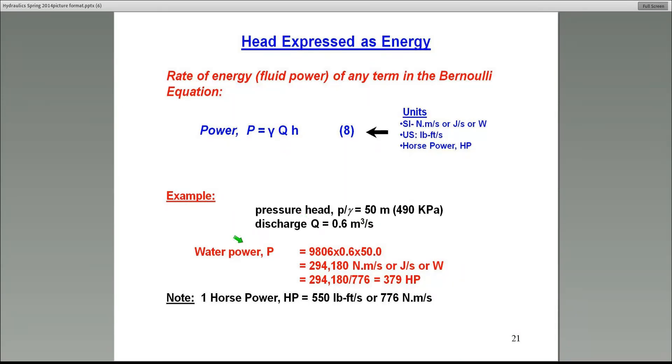Then the water power, the amount of energy that that particular fluid possesses, is obtained by using this formula gamma, Q, and H. So in this case, gamma is 9806, and Q is 0.6, and therefore, multiply all these three quantities, you end up with 294,180 newton meter per second or joules per second. Remember, that's also called a watt, a W. That's the unit of power in SI system of units.